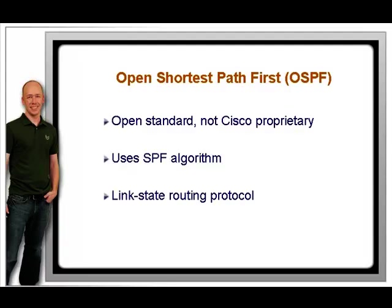To determine the best path, OSPF uses a metric called cost, which Cisco defines as 10^8 over bandwidth. If you had a 100 megabit link, the cost would be 1 because 100 million divided by 100 million is 1. For example, 10 megabit has a cost of 10, 1.544 megabits — a T1 — has a cost of 64, and a 64K has a cost of 1,562. The SPF algorithm places each router as the root of a tree and calculates the shortest path from itself to each destination. The shortest path then gets put into the routing table and is used to route packets to their destination.